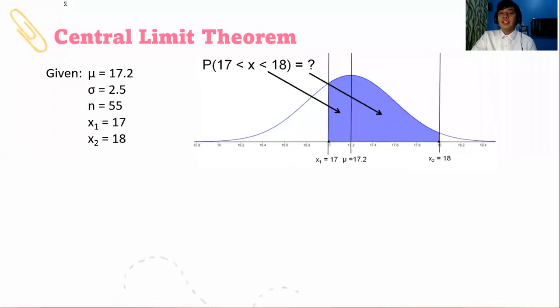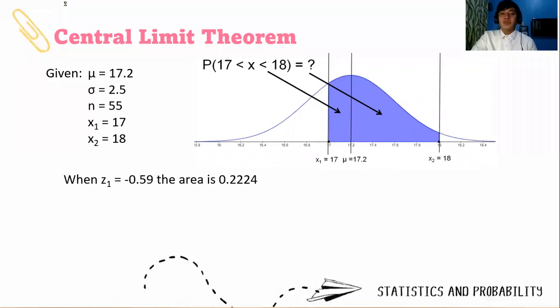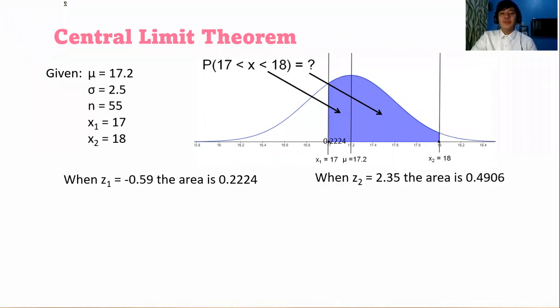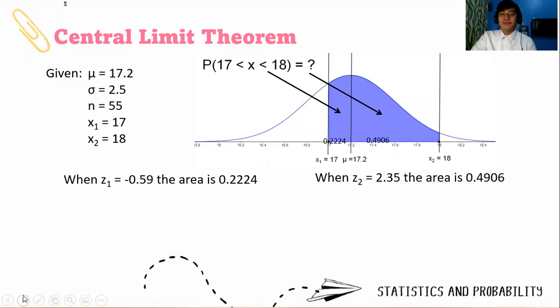Kindly get your z-table. Let's start with negative 0.59. You should get an area of 0.2224. For the second one, when z₂ is 2.35, if you get an area which is 0.4906, then you are looking on the z-table correctly. Did you see them? Great.